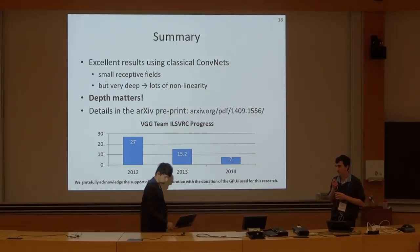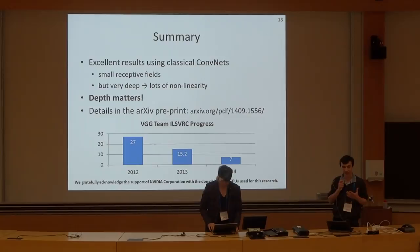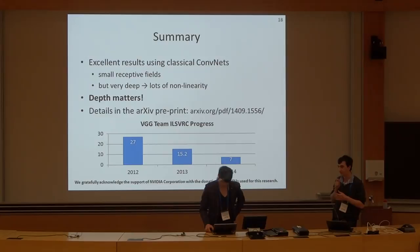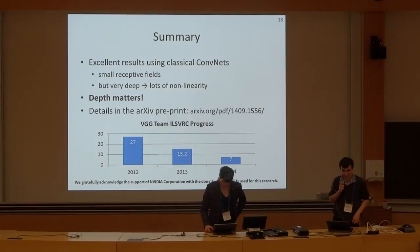Regarding the question about using 2x2 convolutions: we used 3x3 because it captures the notions of left, right, center, up, down, and center. It is possible that 2x2 convolutions could also work, but we decided to limit ourselves to 3x3 as the smallest reasonable convolution size. However, 2x2 is worth investigating — though you might need even more layers, which is not necessarily bad.